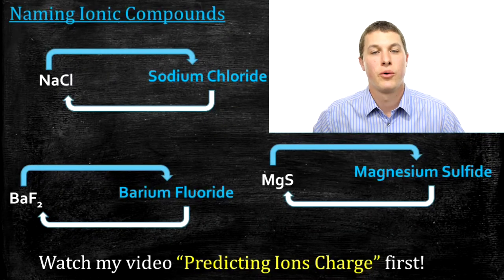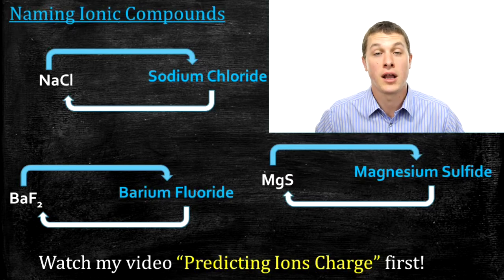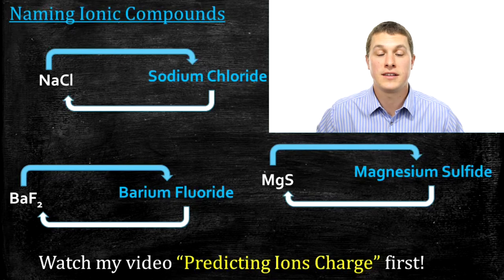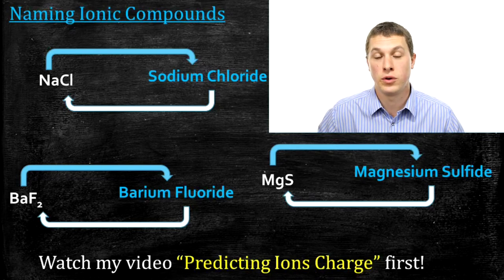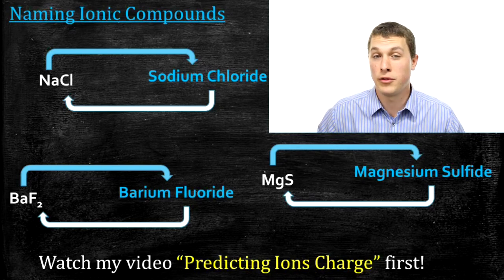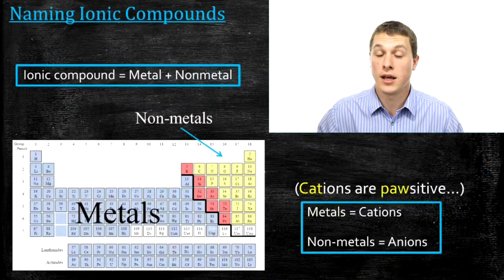In this episode of Real Chemistry, we're going to start a series on naming compounds. In this particular video, we're just going to talk about ionic compounds. The basic problem here is: given NaCl as a chemical formula, how do you go to the name of that compound, which turns out to be sodium chloride? So in this video, we're going to talk about those naming rules, just for ionic compounds.